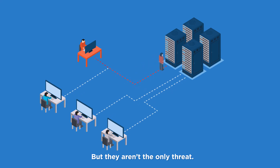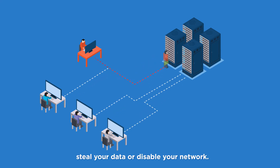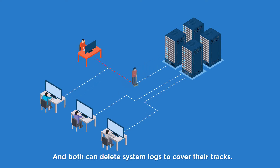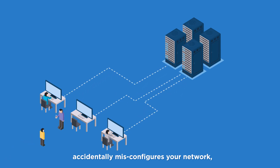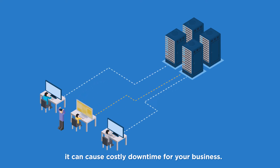But they aren't the only threat. A malicious insider can also steal your data or disable your network. And both can delete system logs to cover their tracks. Human errors pose similar risk. If a contracted junior sysadmin accidentally misconfigures your network, it can cause costly downtime for your business.